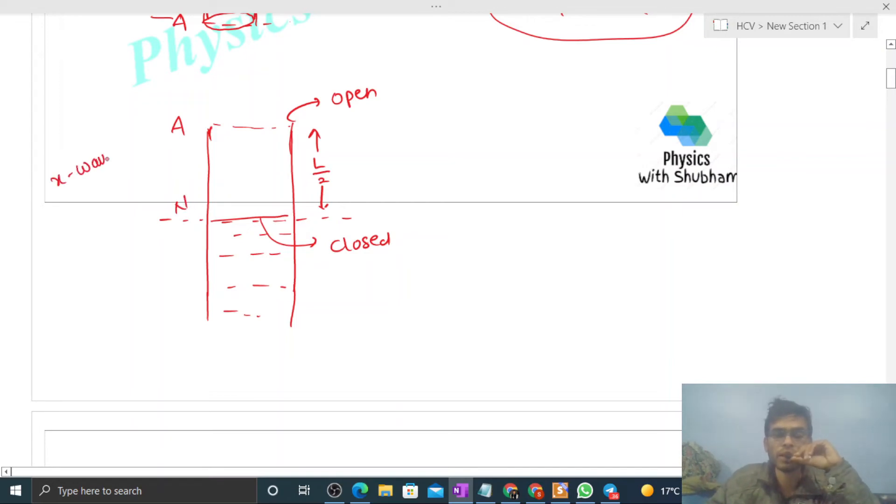I'm talking about displacement wave, right? So in fundamental mode of vibration, you know, a half loop will form like this. And what is the distance between an anti-node and a node? That is λ/4.